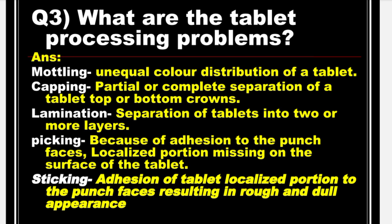Next is: What are the tablet processing problems? Answer: Mottling — unequal colour distribution of a tablet. Capping — partial or complete separation of a tablet top or bottom crowns. Lamination — separation of tablet into two or more layers. Picking — because of adhesion to the punch face, a localised portion is missing on the surface of the tablet. Sticking — addition of tablet localised portion to the punch faces, resulting in rough and dull appearance.